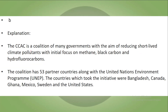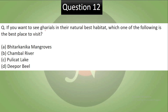The CCAC is a coalition of many governments with the aim of reducing short-lived climate pollutants, with initial focus on methane, black carbon, and hydrofluorocarbons. The coalition has 53 partner countries along with the United Nations Environment Program. The countries that took the initiative were Bangladesh, Canada, Ghana, Mexico, Sweden, and the United States. Statement 1 is incorrect because it is not a G20 initiative.